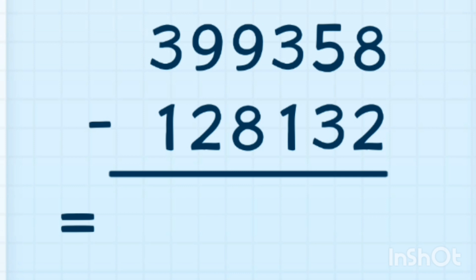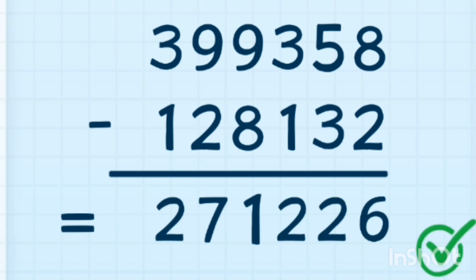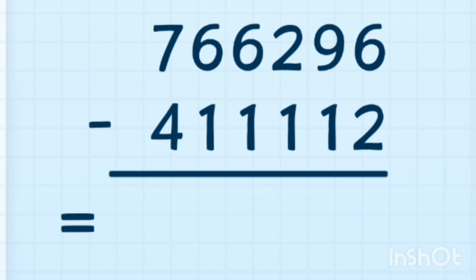9 minus 9 minus 2, 0 3 minus 1 1, 1 0 7, 7 7 6 minus 4 9 minus 7 7. 8 8 9 minus 1 0 1.